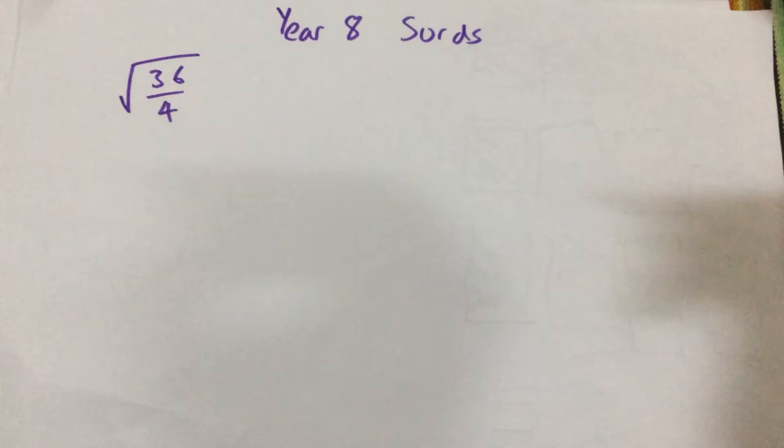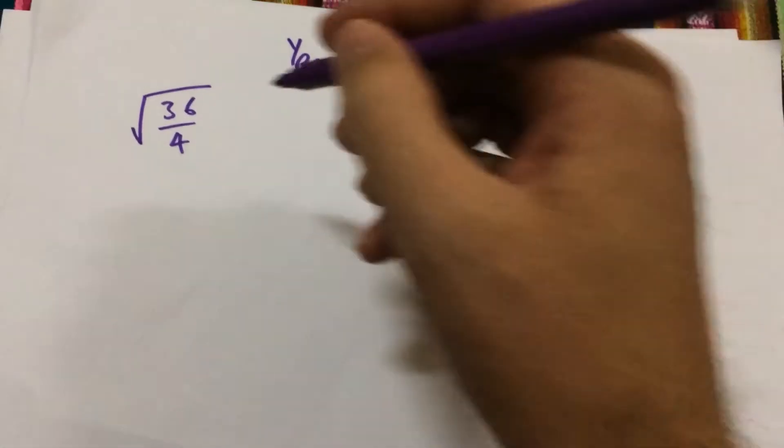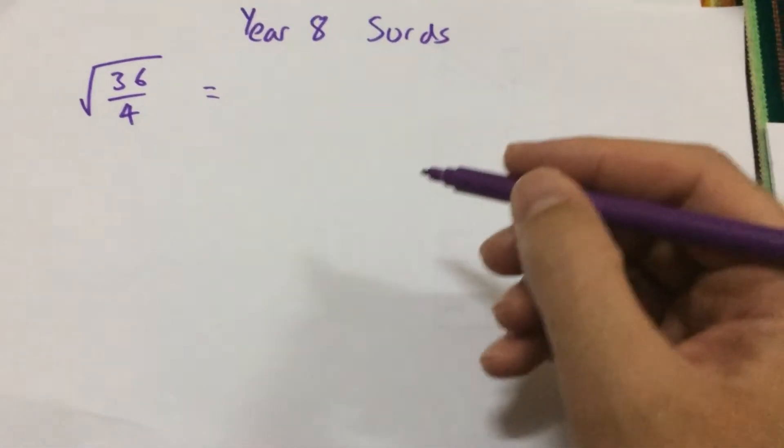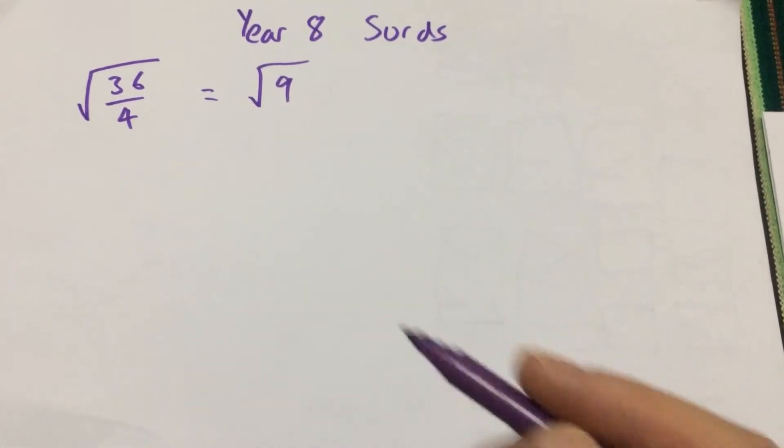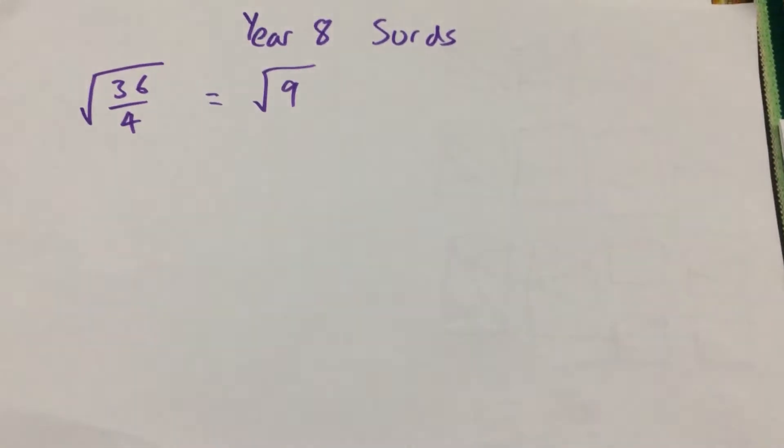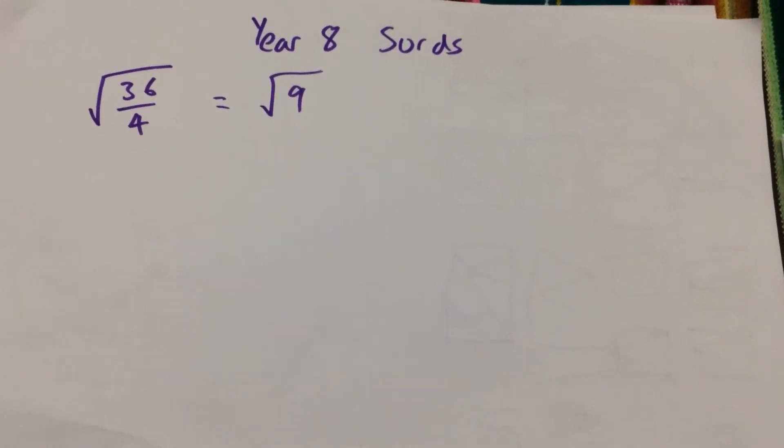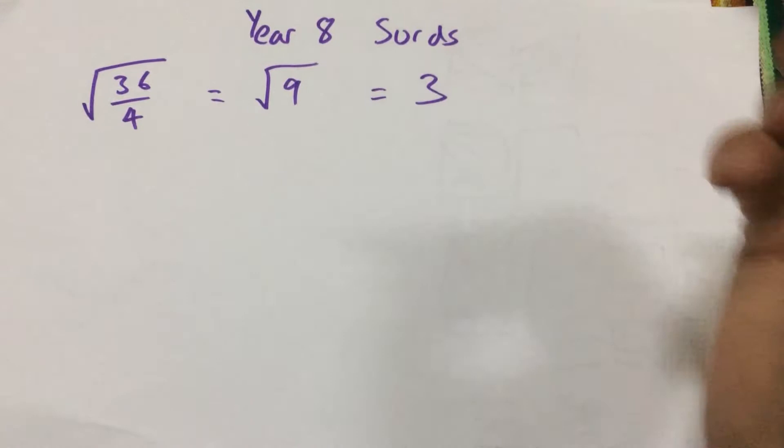Root 36 over 4. Now, if I just look within that square root sign, 36 divided by 4, we should know it's 9. If I go through my 4 times table or divide 36 by 4, we know it's 9 and we know the square root of 9 is 3.